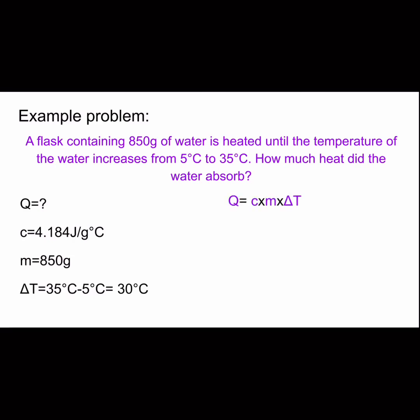We're going to plug all of our numbers into our equation: Q equals C times M times delta T. So when we do that, it looks like this: 4.184 times 850 times 30°C. When you multiply all of that, you should get 106,692 joules. That J stands for joules. Anytime you're measuring heat, you're always going to have joules.